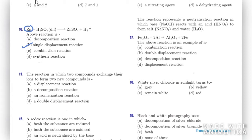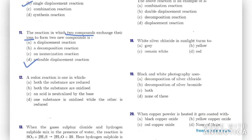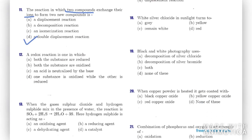Question eleven: a reaction in which two compounds exchange their ions to form new compounds. Whenever ions are exchanged between two compounds, it is a double displacement reaction.